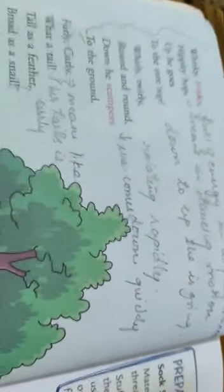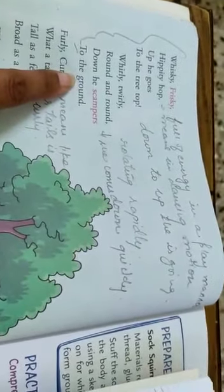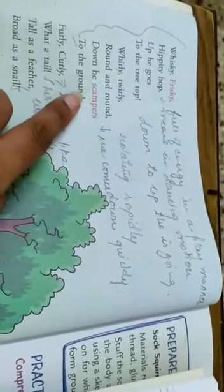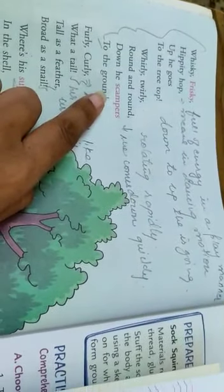So, you have to learn this poem, the first 8 lines. From here till here, first 8 lines, you have to learn the poem. Now, we have done the exercise part and the question answers.